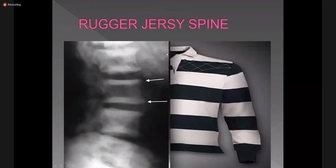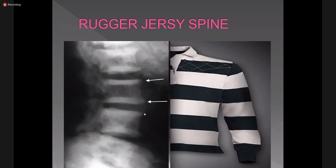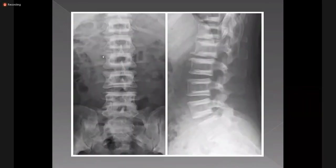This is subperiosteal erosion. Along with that, these small holes are the intracortical resorption. Coming to the rugger jersey spine: due to deposition of osteoid along the superior and inferior end plates, this is called rugger jersey spine and it resembles a rugby jersey. It is also seen in renal osteodystrophy. Here you can see sclerotic bands along the superior and inferior end plates — this is rugger jersey spine.